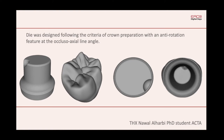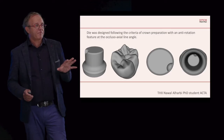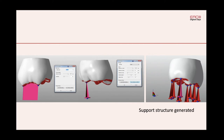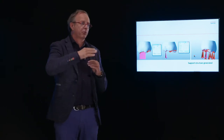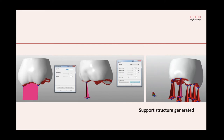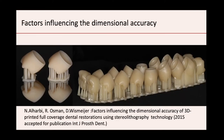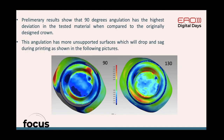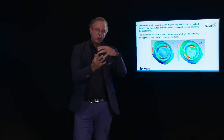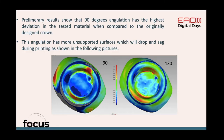The die had an anti-rotation feature, a finishing line, and an occlusal surface. We looked at the fit of the lines and also how much deviation there was from the original STL file. What I'm showing here is the support structure — you have to generate support structures to build your 3D printed object; without them the object sits directly on the platform and gets damaged on removal. We tried different angulations and found that 90-degree angulation had the highest deviation in the tested material compared to the originally designed crown, likely because it has more unsupported surfaces which drop and sag as you remove the product from the resin bath.